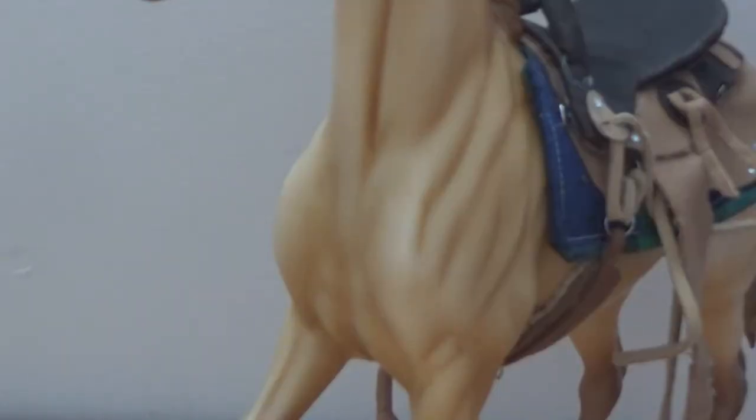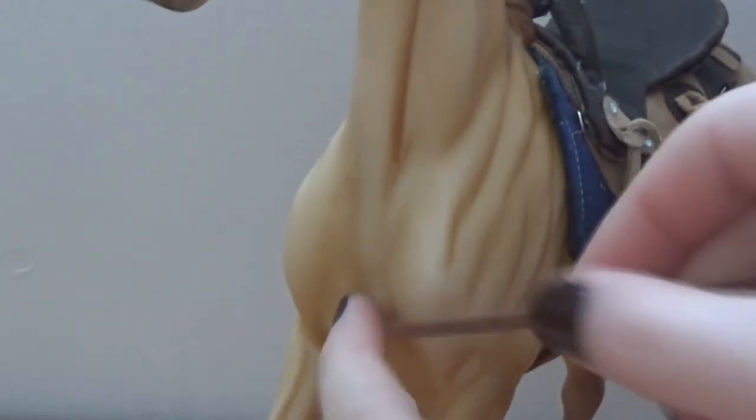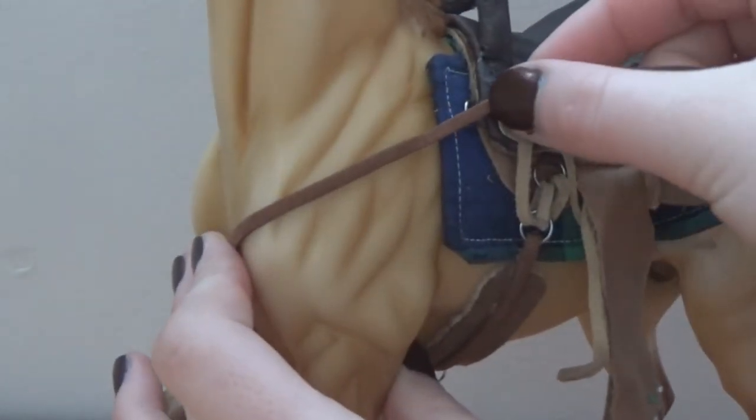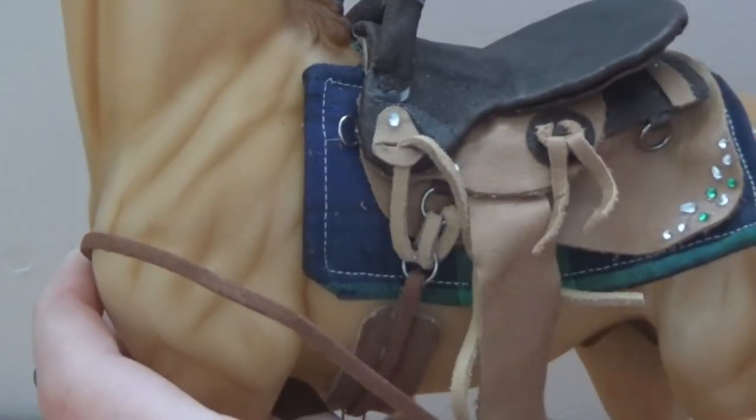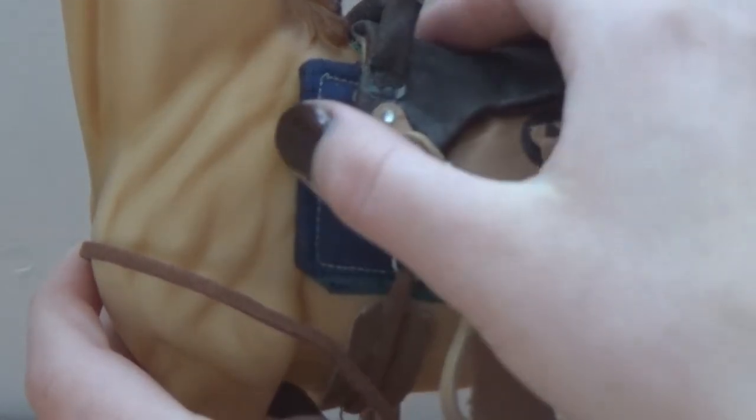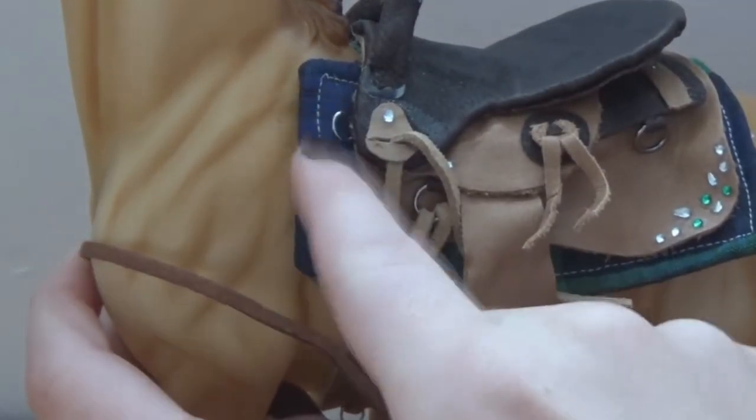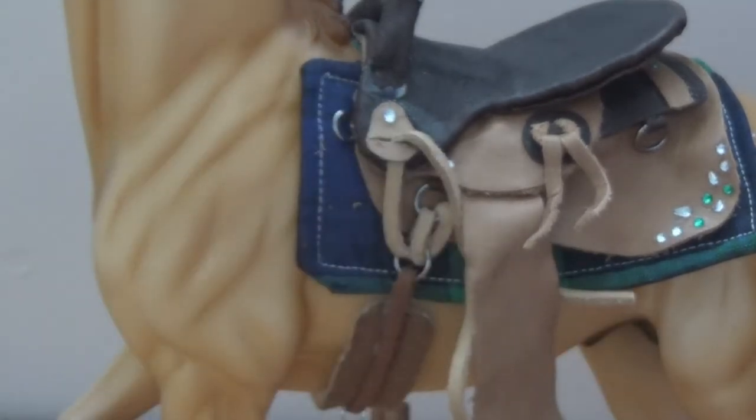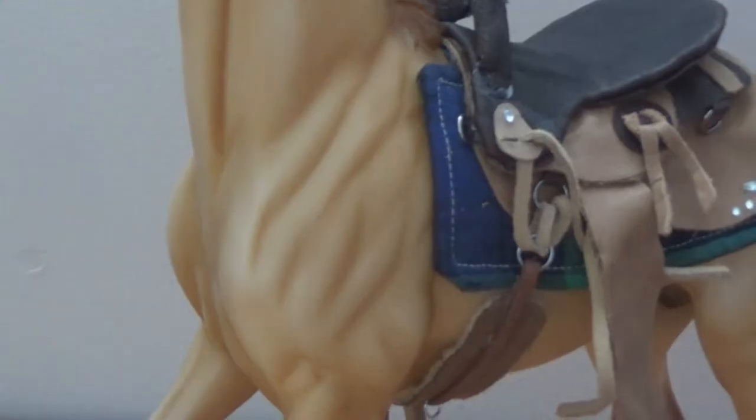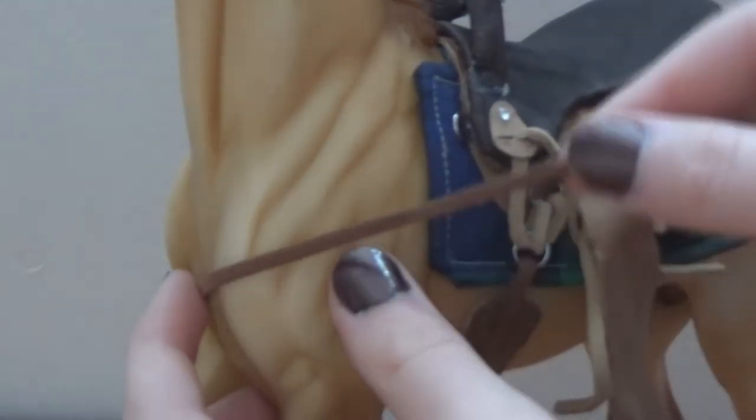So the first thing you have to do is measure how long you need your strips of leather to be. To do that, measure from the middle of the chest here to where it attaches on the saddle. If you have followed my saddle tutorials they will have the place where it attaches to the saddle. Just make sure your saddle has a place for it to attach to. So just measure it from the center of the chest to this point and then you have to add extra.